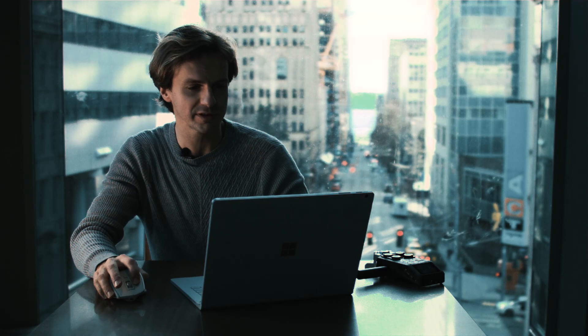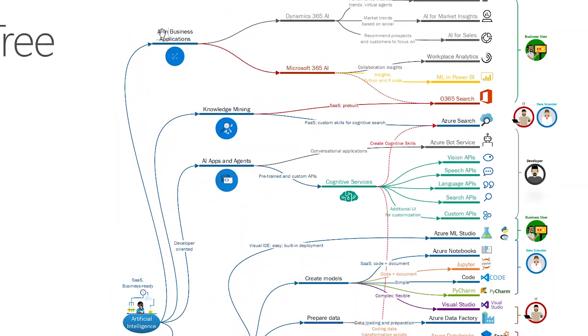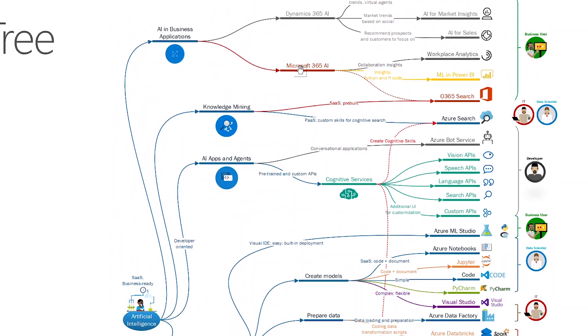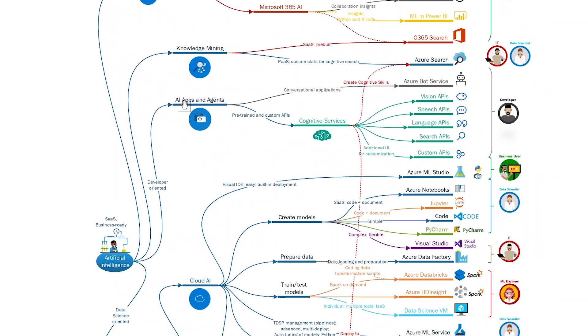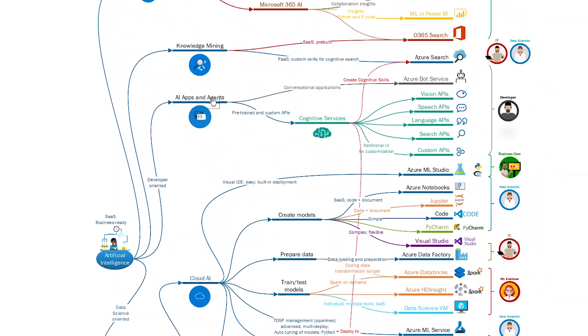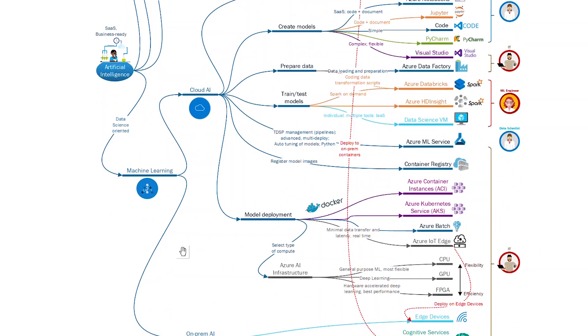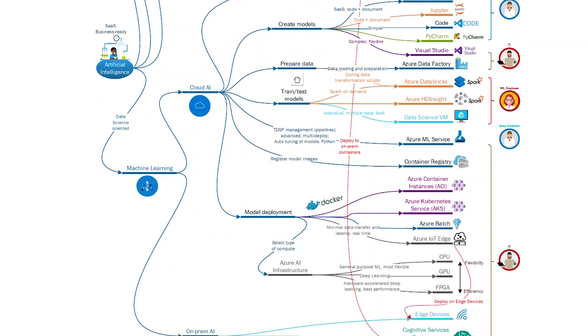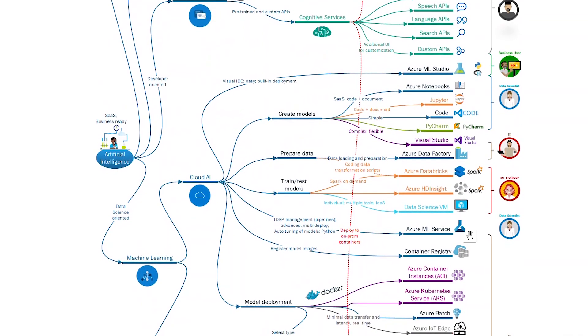This is how I describe artificial intelligence using a decision tree, or mind map. To reiterate: we discussed AI and business applications in Office 365, separately knowledge mining capabilities, separately applications and agents, and then the big topic of machine learning — both on-premises and in the cloud. In the cloud, Azure Machine Learning Service allows you to organize the team data science process.